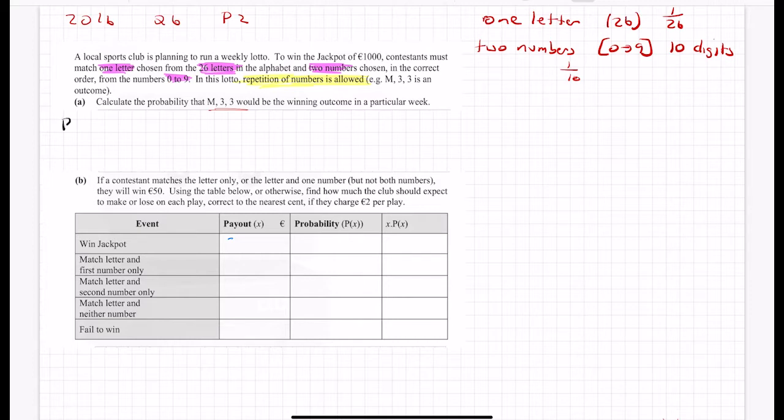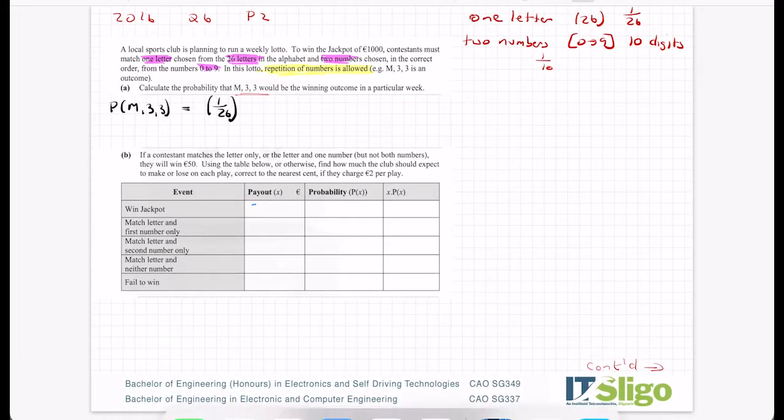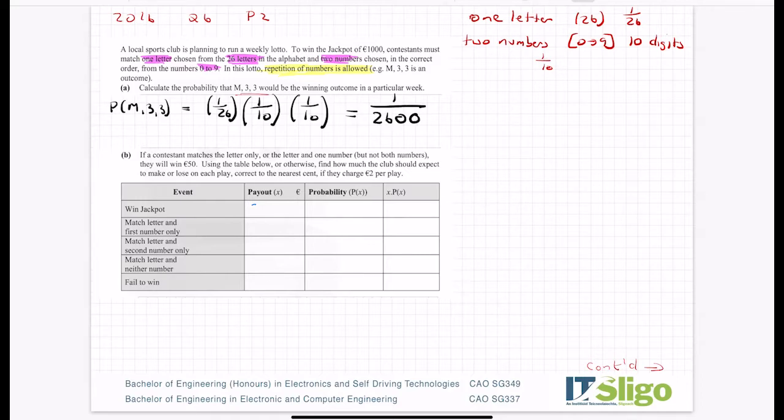Calculate the probability that M33 would be the winning outcome in a particular week. The probability of M33 is 1 over 26 times 1 over 10 times 1 over 10. That equals 1 over 2600. So the probability of winning the lotto is 1 over 2600. That's the first part, there was 10 marks for that in the exam.